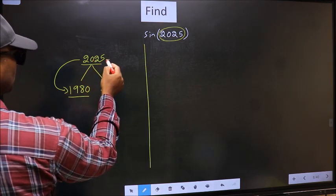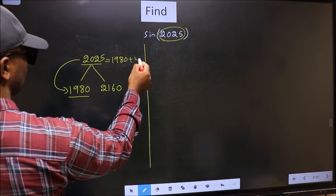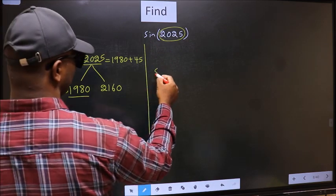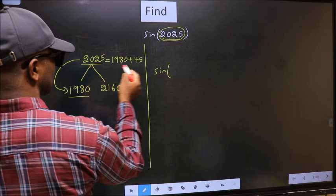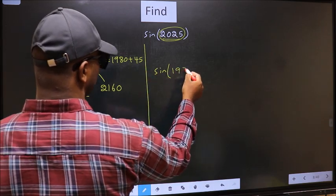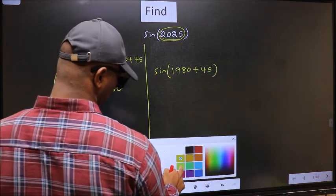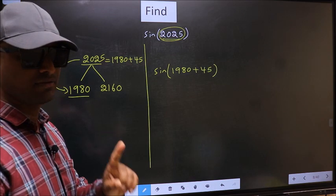So this now should be written as 1980 plus 45. So this will become sine. In place of this, we should write 1980 plus 45. This is your step 1.